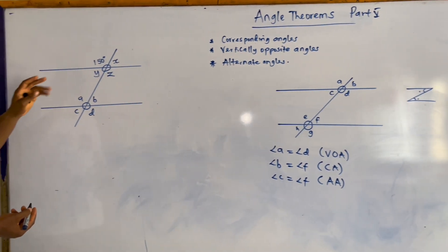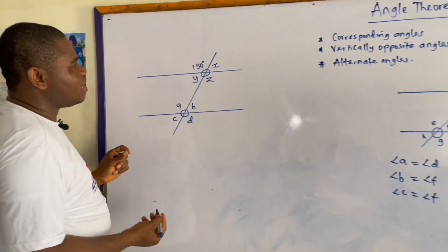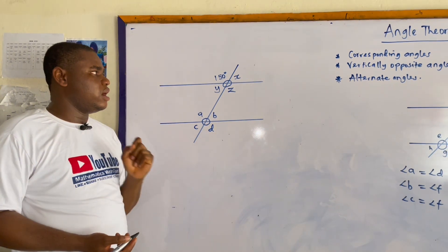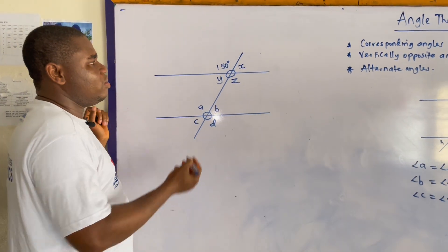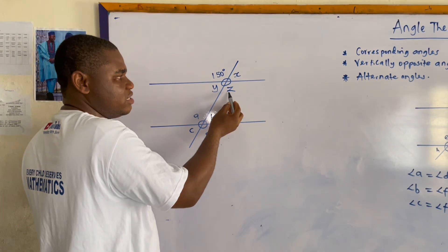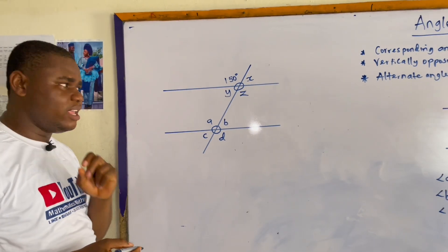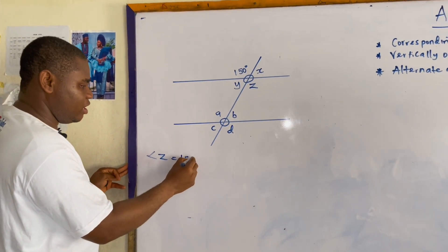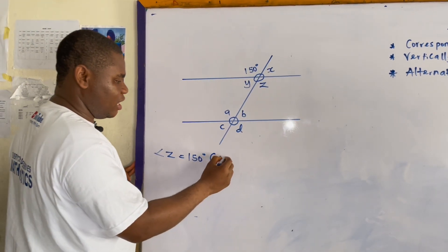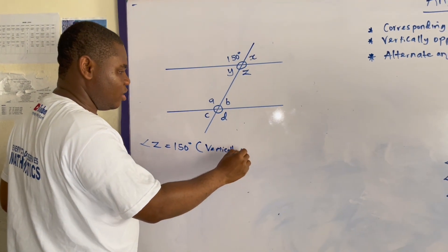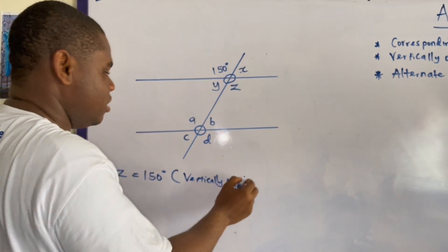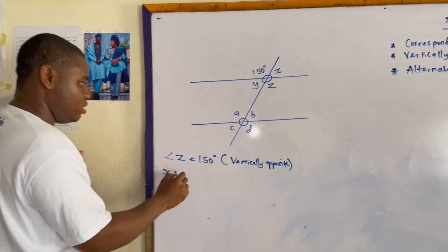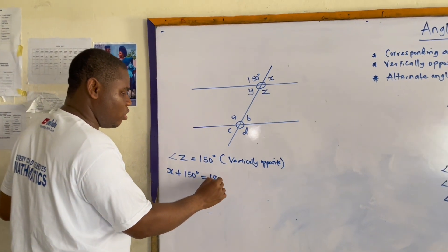Let's use this idea to solve our first example. We have been asked to find all the missing angles, but we have been given only one angle. The first thing: Z equals 150 degrees because it is vertically opposite to the given 150 degrees.